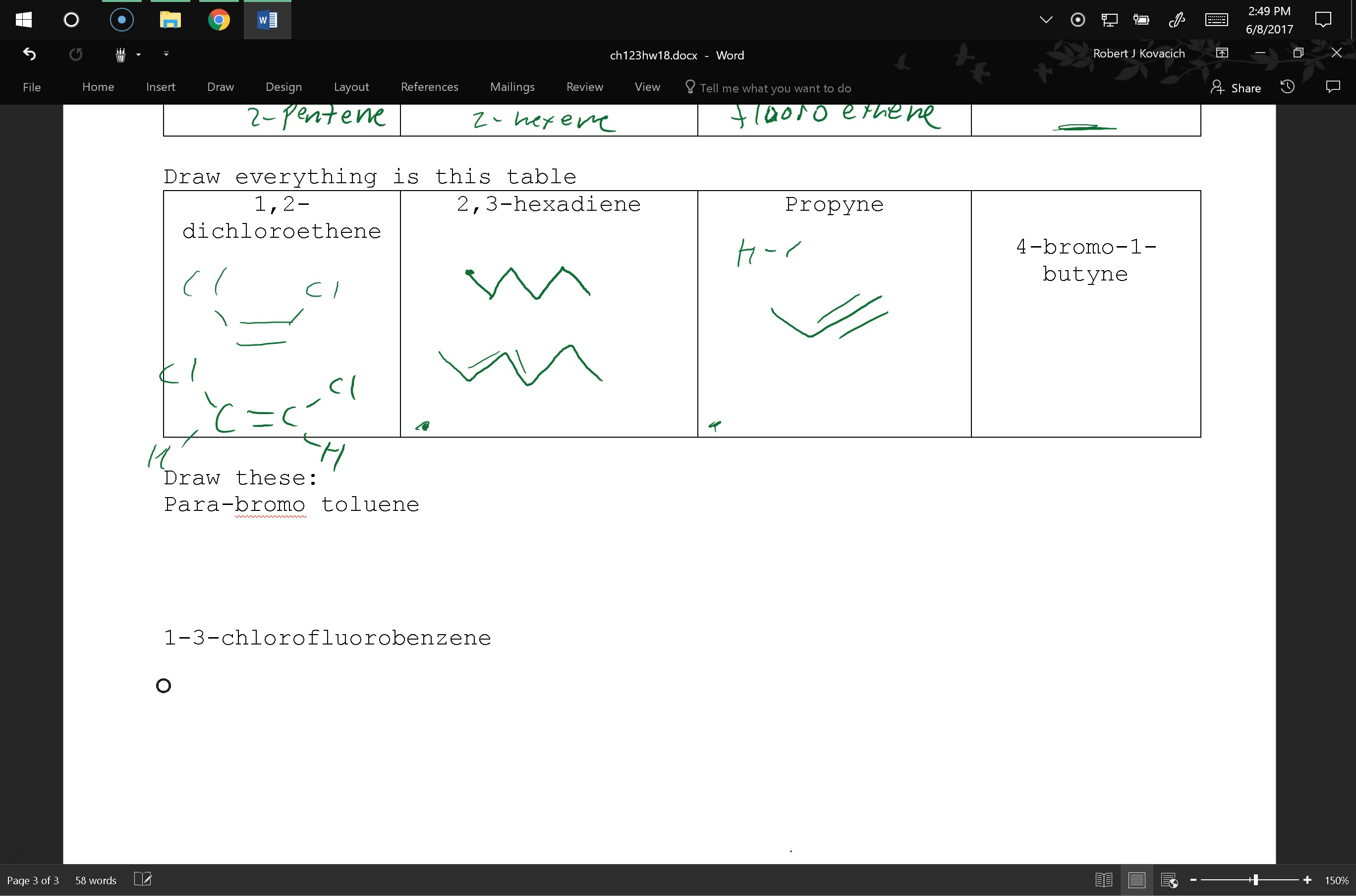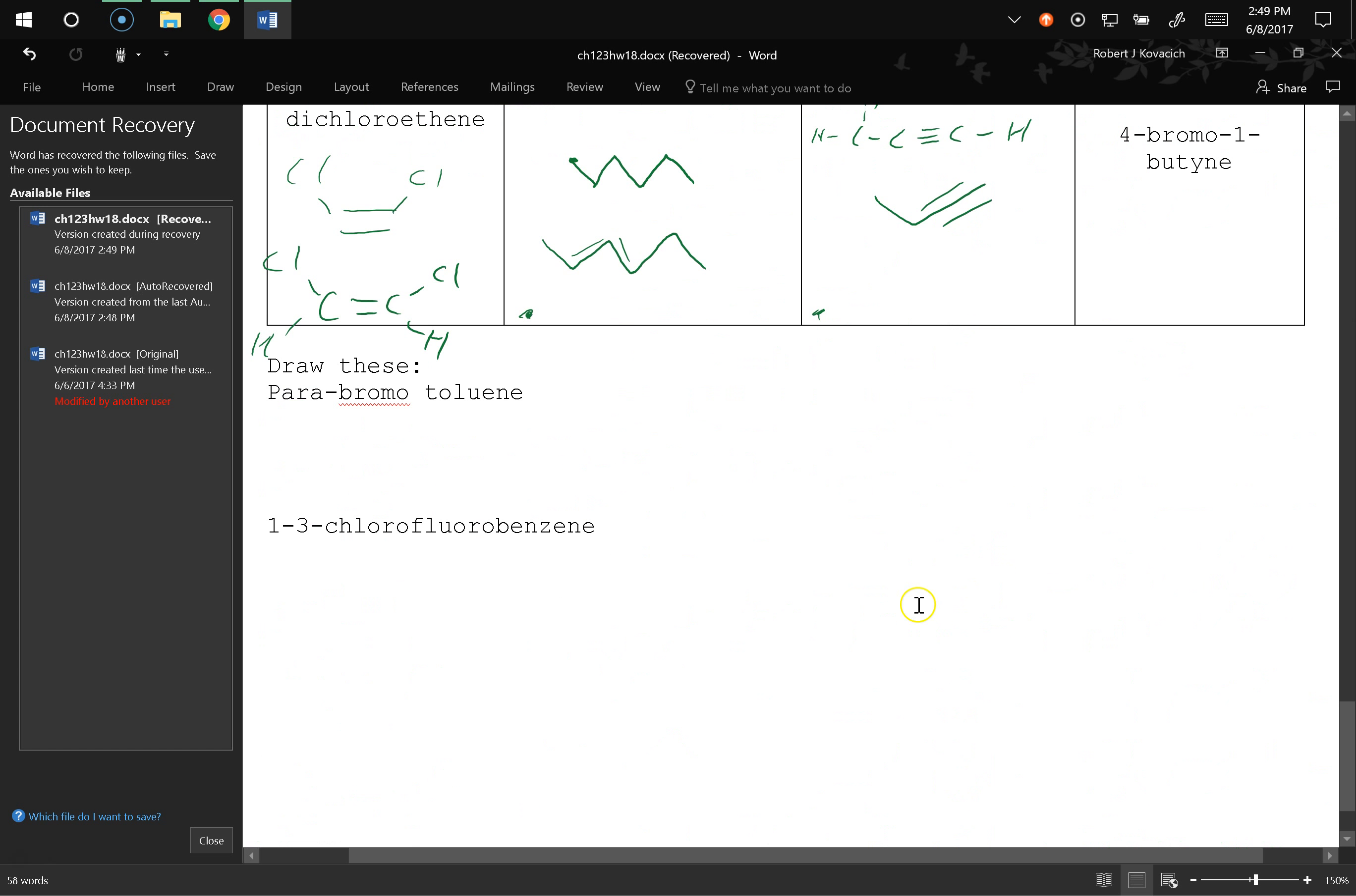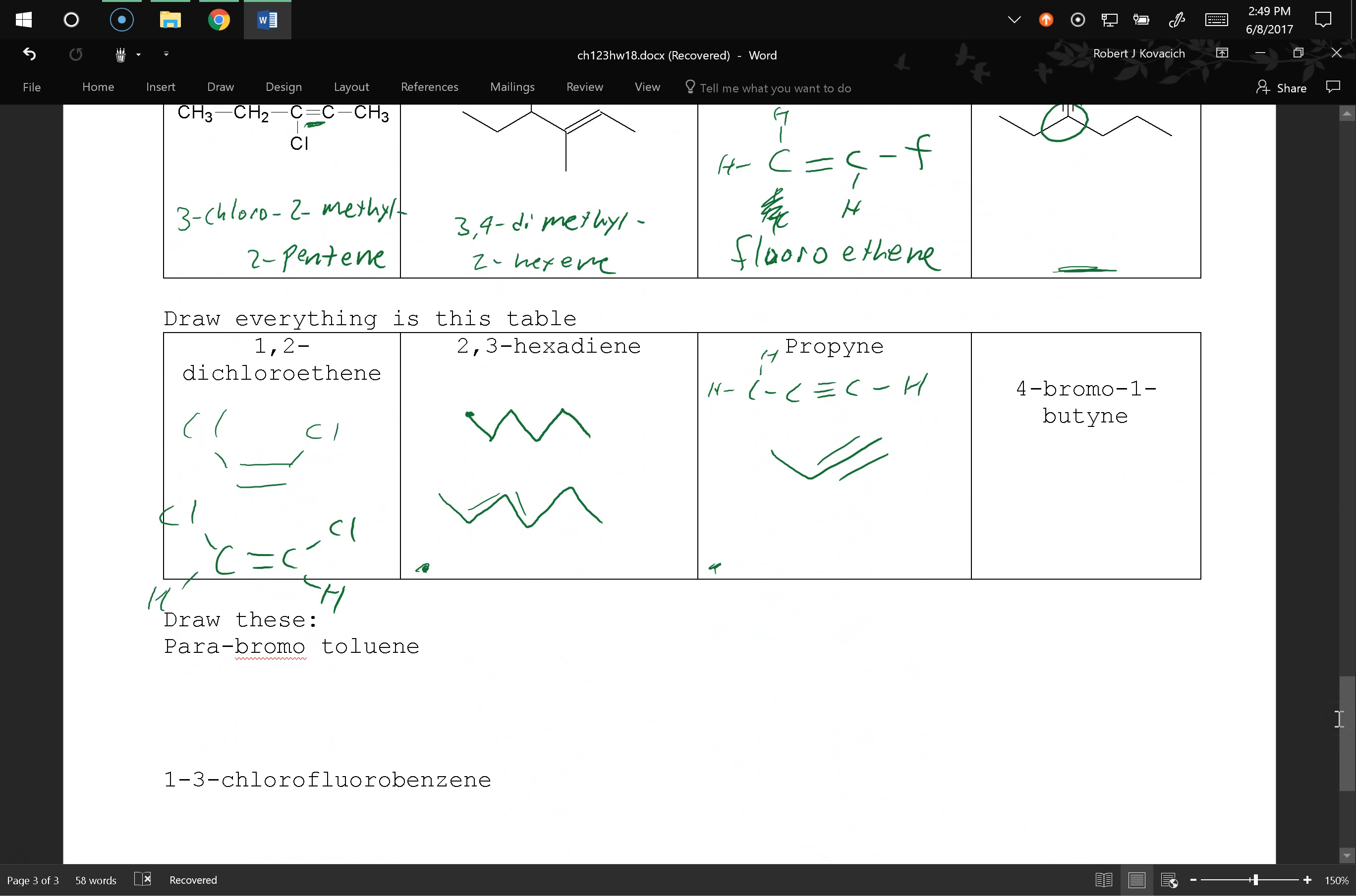Propene. Something like that. If you want, you could draw H, C, triple bond C, H, oh wait, I'm missing something there. Sorry. Prop. Cool. Thanks, Ward. Okay. And we've got two, three, four. And then two, three, four. And then a triple bond there.